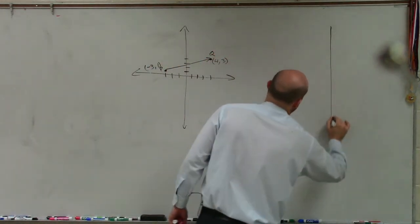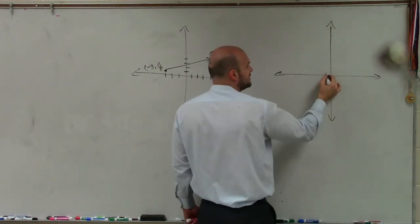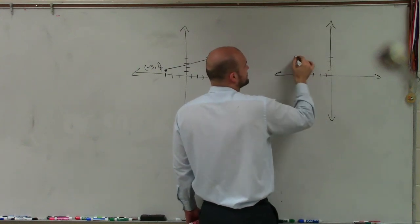And then we'll do another vector. And this vector is going to be in component form, which we like a lot. Negative 1, 2, 3, 4, 5, 6, and 1, 2, 3, 4. So negative 6, 4.